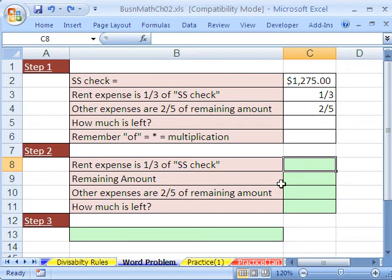All right, rent expense is one third of Social Security check. Remember, of means multiply. So watch this, equals this times this, and then enter, $425.